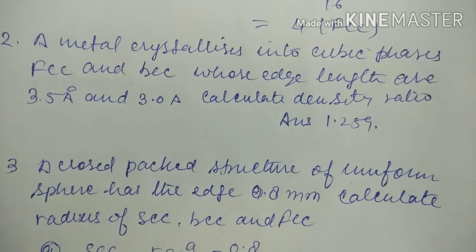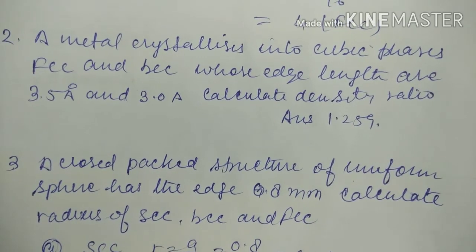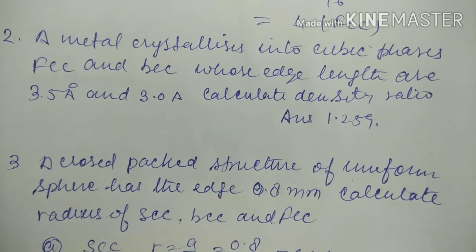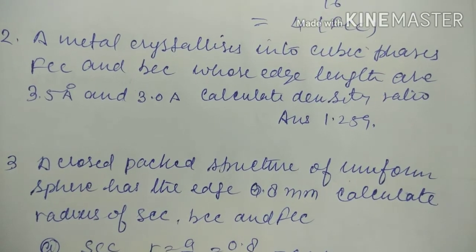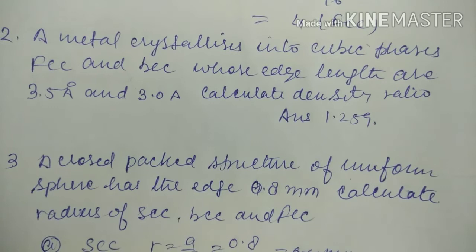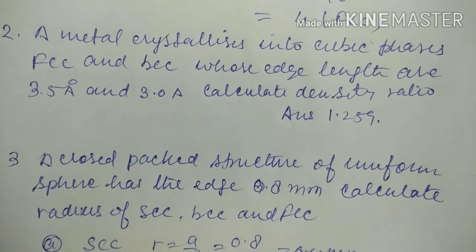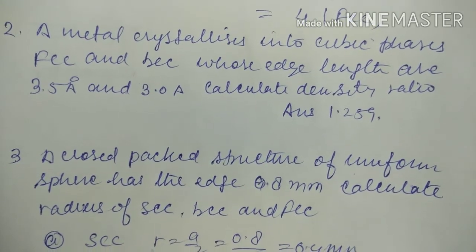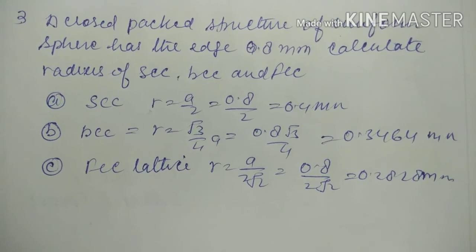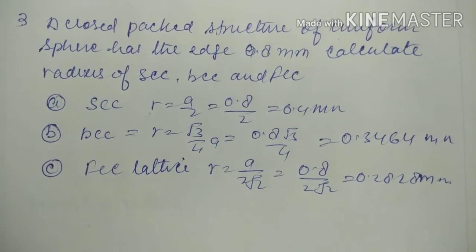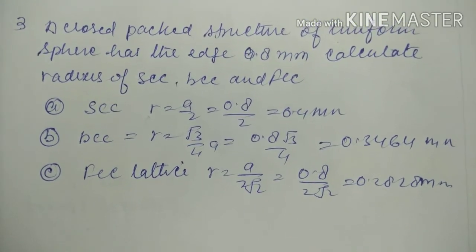Question is: methane crystallizes into cubic phases, FCC and BCC, whose edge lengths are given. If you put the density values, the ratio will be 1.259.